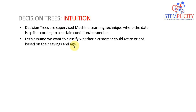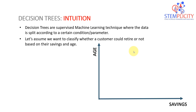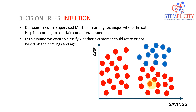As a data scientist working at a bank, you want to develop a model that decides whether a customer is eligible to retire or not. On the x-axis we have the savings of each customer and on the y-axis their age. These are the data points collected from all customers within the bank — we have two classes: class zero shown as red bubbles and class one shown in blue.